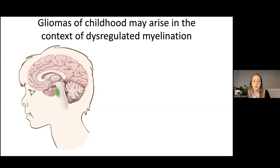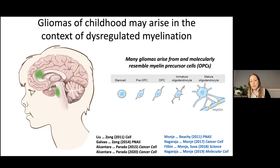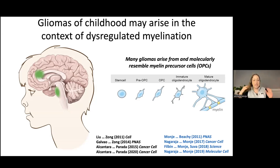It turns out that the spatiotemporal pattern of gliomagenesis maps pretty well onto the spatiotemporal pattern of developmental myelination — such that at a time when there is a discrete wave of developmental myelination in the ventral pons, diffuse intrinsic pontine glioma, also recently renamed diffuse midline glioma of the pons, tends to occur. And at a time of discrete increase in myelination in the neocortex, hemispheric high-grade gliomas of adolescence and young adulthood tend to occur. The cell of origin for many forms of high-grade glioma turns out to be in the oligodendroglial lineage.